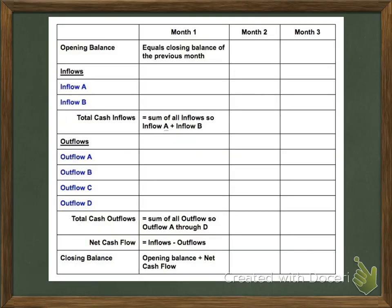Right here we have a template of what a cash flow forecast should look like. Our columns are our months, and our rows have our inflows — the money coming in — and outflows, money going out. We have our opening balance, which is the money you have when you go into the office January 1, start of the month. That's how much cash you have available in the bank, and it's the same as your closing balance from the previous month.